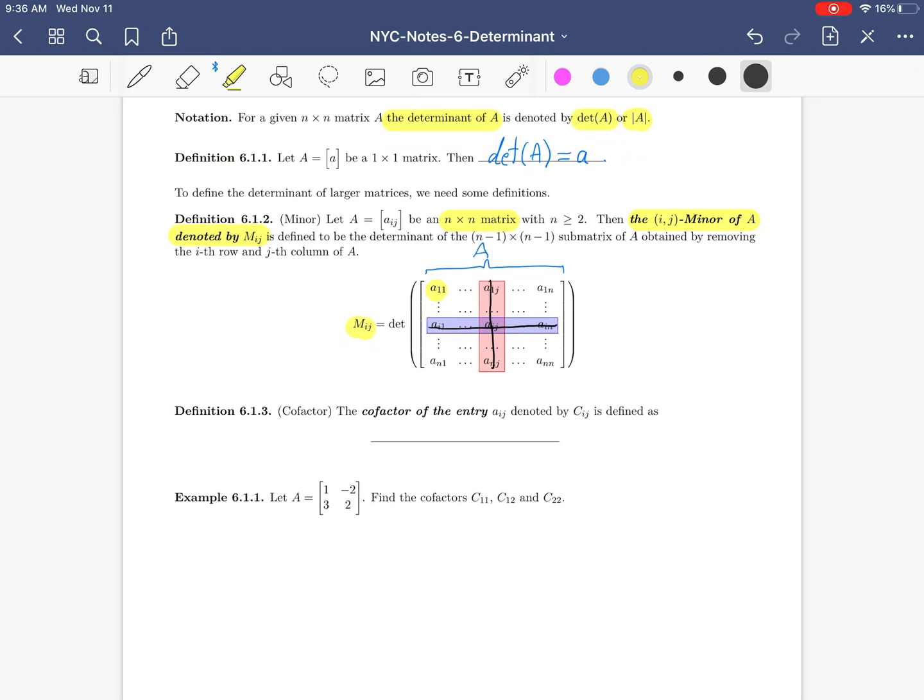Now let's look at the cofactor of the entry IJ. Definition 6.1.3, cofactor. The cofactor of the entry A_IJ is denoted by C_IJ, and is defined as C_IJ equals minus 1 to the I plus J times the minor M_IJ. C_IJ is also a number. You see C_IJ is almost same as M_IJ, except you have to multiply M_IJ by negative 1 to the I plus J.